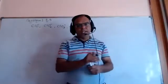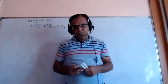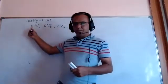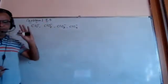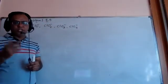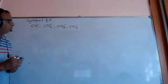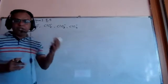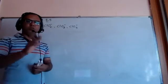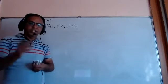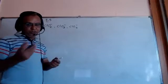Here, chlorine is the important element because oxygen's oxidation number is fixed at minus two in all species. So chlorine's oxidation number varies, and we have to find whether it can be oxidized, reduced, or both. If both are possible, then the species can undergo disproportionation reaction.